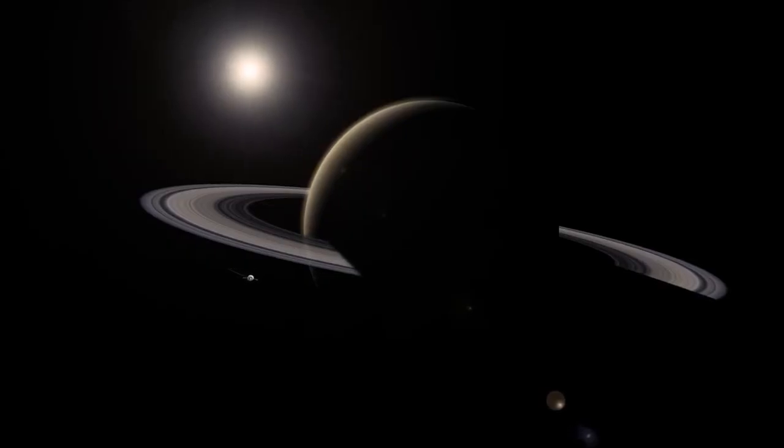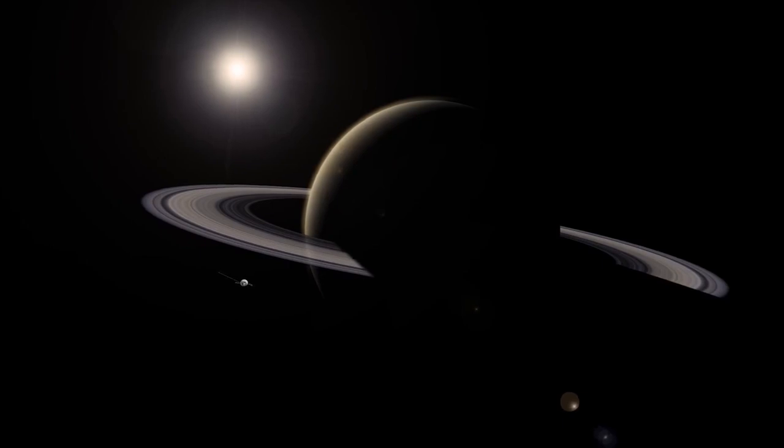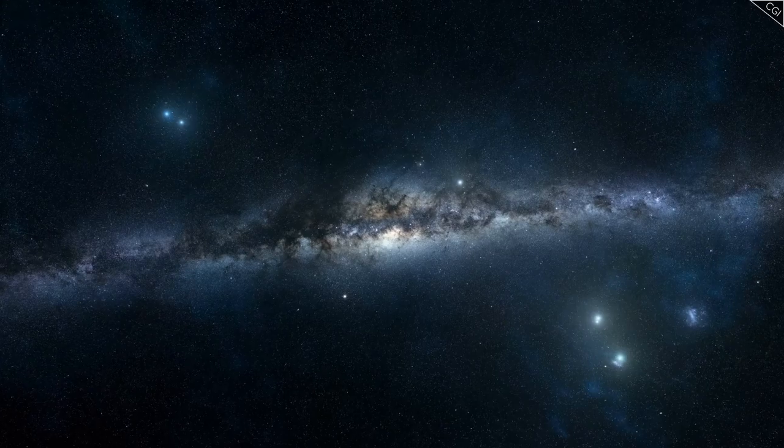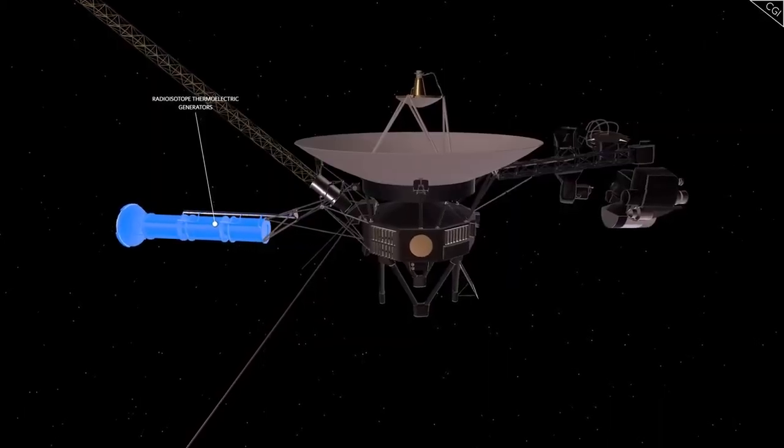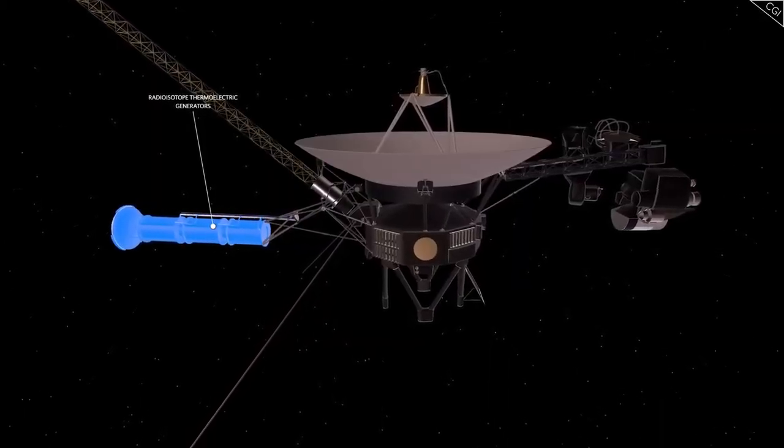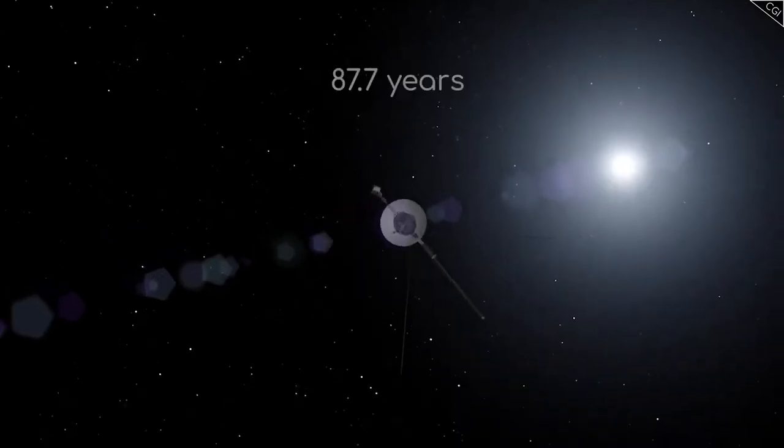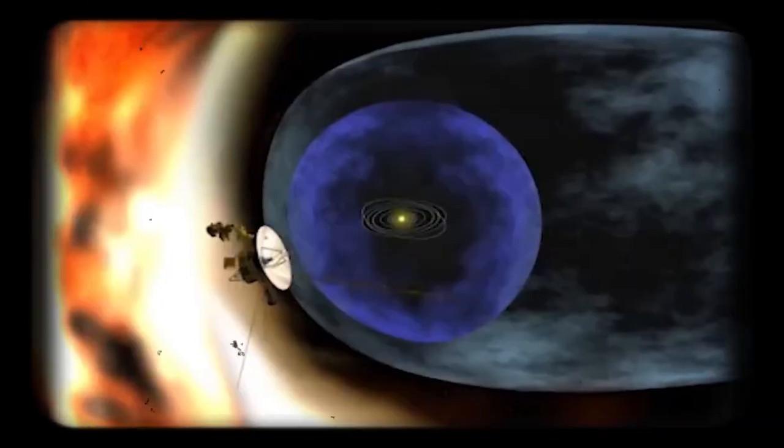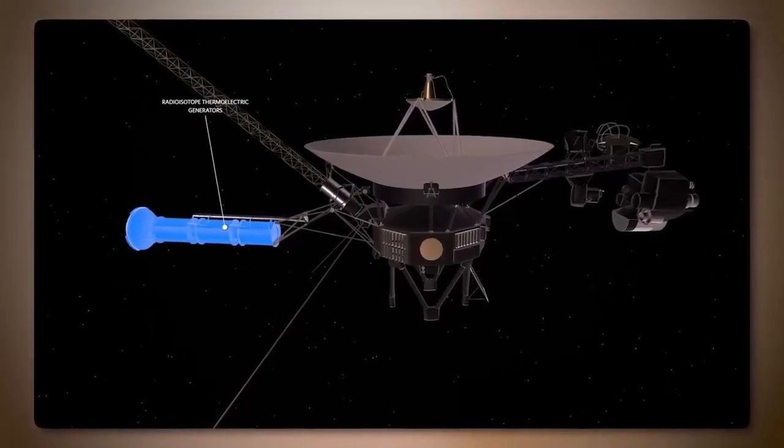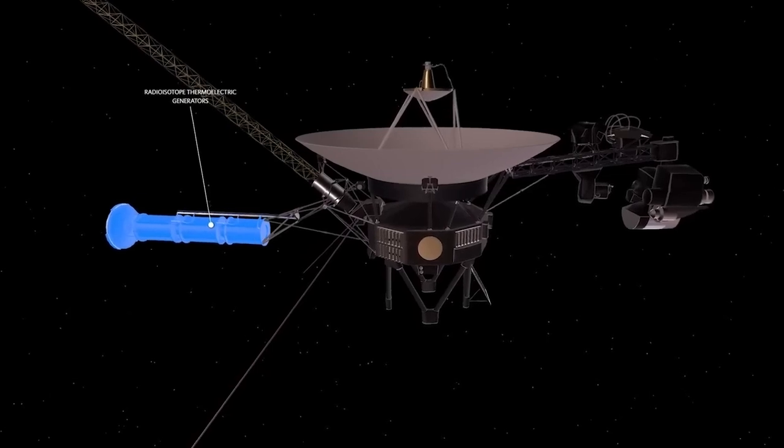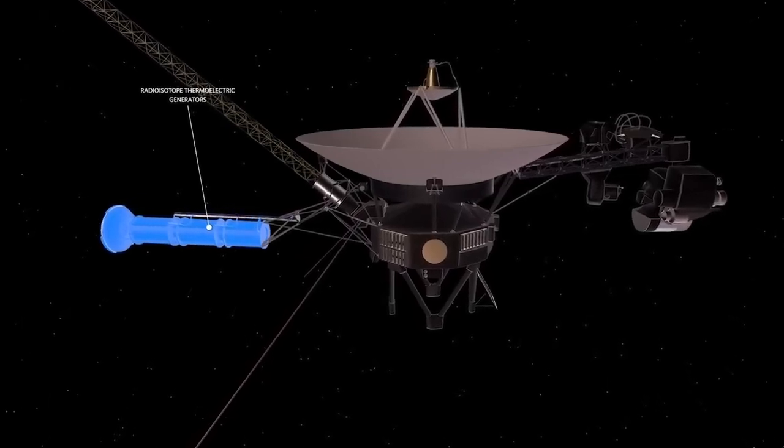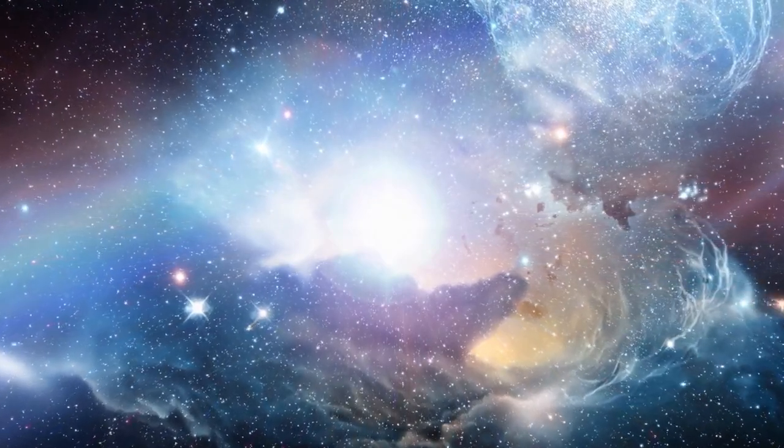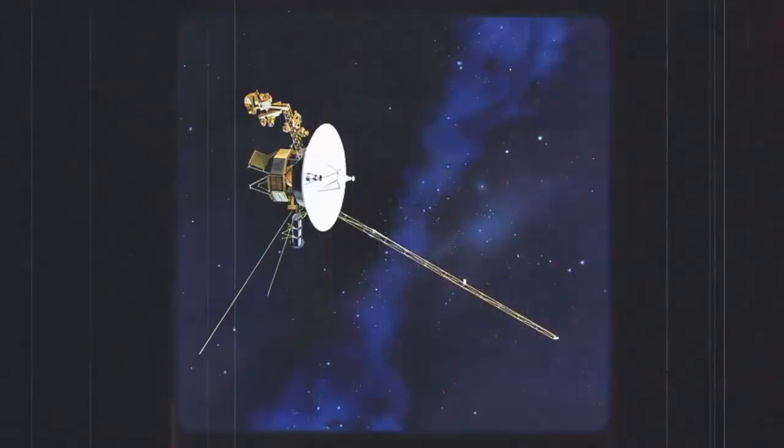Eventually, the solar wind meets the interstellar medium, a region filled with remnants of ancient stellar explosions. Much like oil and water, the solar wind and the interstellar medium don't easily mix, creating a boundary called the heliosphere. This vast bubble, powered by the solar wind, extends roughly 11 billion miles from the Sun, encapsulating the Sun, all eight planets, and a significant portion of the solar system's outer regions. The heliosphere acts as a protective shield, guarding everything inside, including us, from the galaxy's most dangerous radiation. Without it, life as we know it would be exposed to potentially catastrophic hazards.